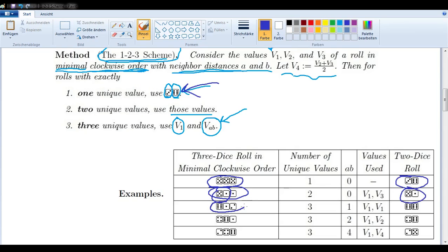If we roll a 6,1,2, then we need to take a look at these neighbor distances. Neighbor distances are one, because the distance from six to one is one, and one. We multiply those together. That's our AB, and that's our index here. So we must use value one, which is six, and again, value one, so double six.